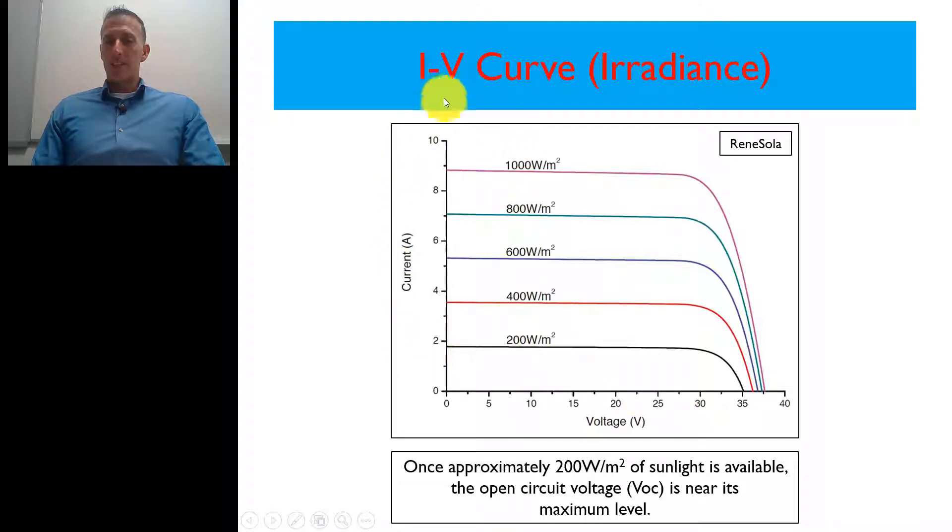Although the irradiance affects current, it directly affects that. What we're really interested in is the voltage side right now. So you can see from 200 watts per meter squared, that's about 20% of the amount of sunlight that would be available at solar noon on a clear sunny day. You can see that at that very dim condition, the voltage on this PV system or this module right here would be pretty close to the maximum.